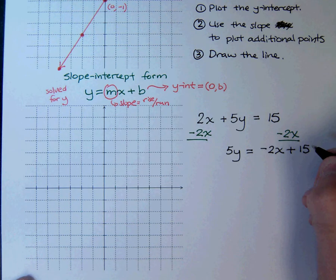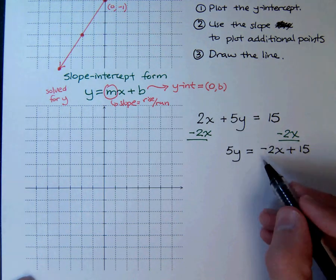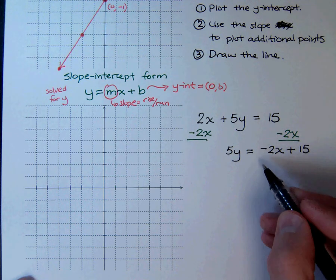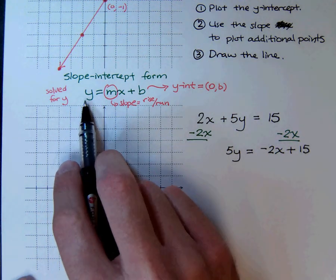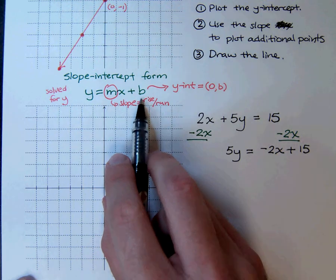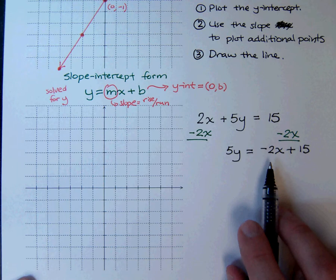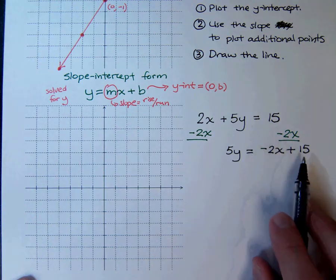And you may be asking, do I have to have it in this order? Can I put the constant first? You can, but keep in mind we're trying to get things to look like this form where the x term comes first and then you have the constant. So it's always a good idea to start getting in the habit of putting your variables first and your constants at the end.